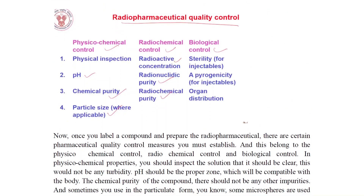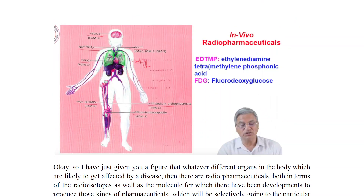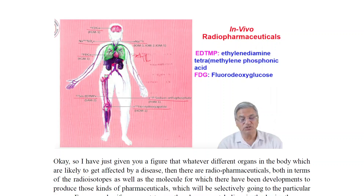Radiopharmaceutical quality control covers physical and chemical controls including physical inspection, radioactive concentration, sterility, pH, radionuclidic purity, radiochemical purity, and particle size where applicable. In vivo radiopharmaceuticals include EDTMP (ethylene-diamine tetramethylene phosphonate) and FDG (fluorodeoxyglucose).